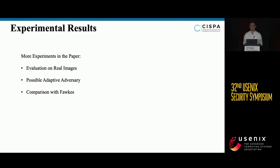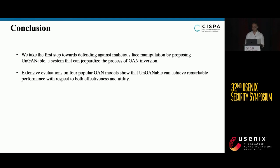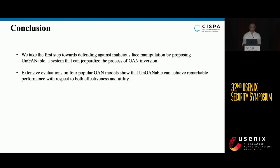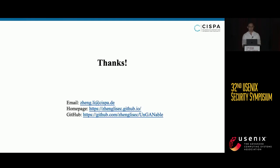There are additional experiments in the paper — please check them out if interested. In summary, this paper takes the first step towards defending against malicious facial manipulation by proposing UnGANnable, a system that can jeopardize the process of GAN inversion. Extensive evaluations on four different GAN models show that the system achieves remarkable performance with respect to both effectiveness and utility. If you have any questions, feel free to send them an email.